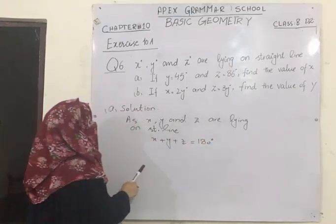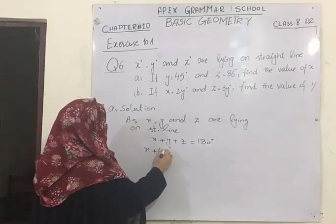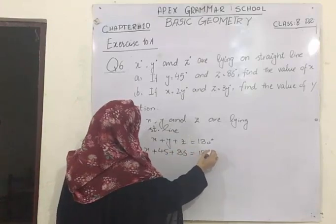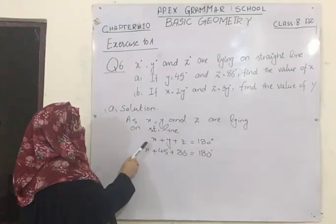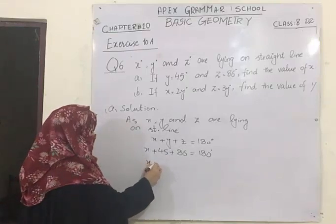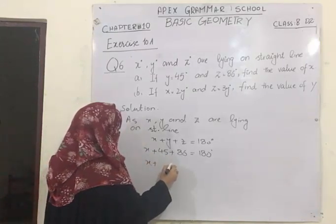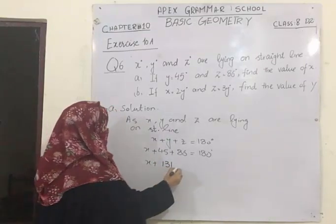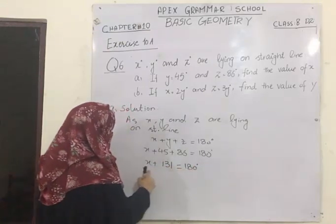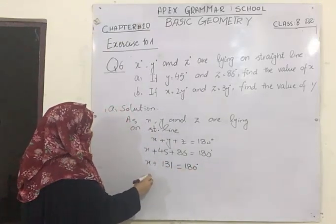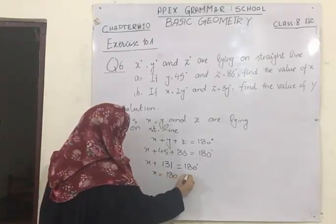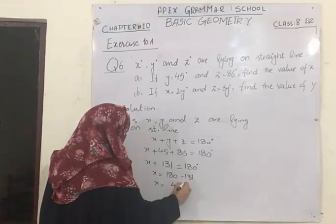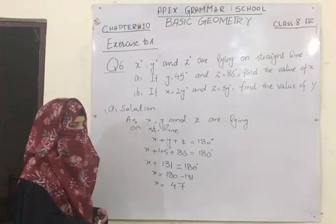Since X, Y and Z are lying on a straight line, they will add up to make 180 degrees. The value of Y is 45 degrees and the value of Z is 86 degrees, so placing their values and adding gives 131 degrees equal to 180 degrees. We have to find X, and since 131 is being added on one side, it will be subtracted on the other. So the value of X is 47 degrees.